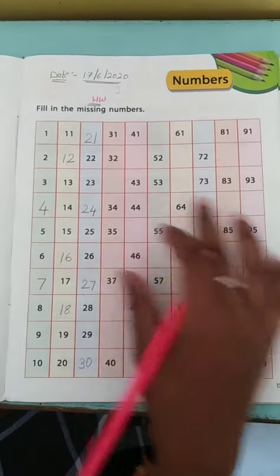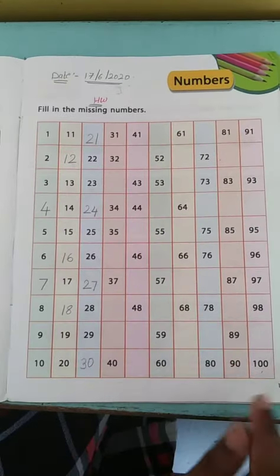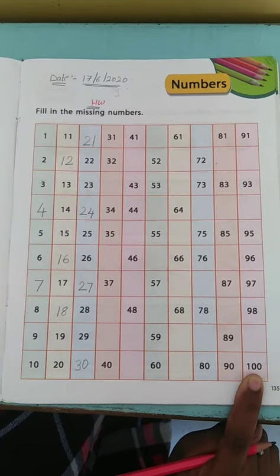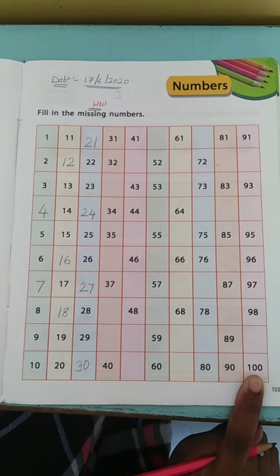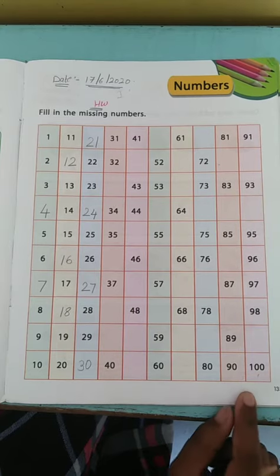This is the way you have to complete all the missing numbers up to 100. And remember, always speak and write the numbers. Bye.